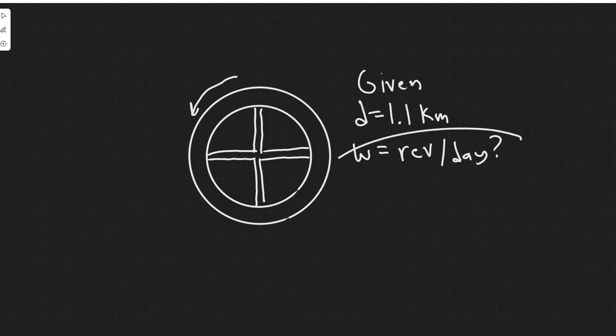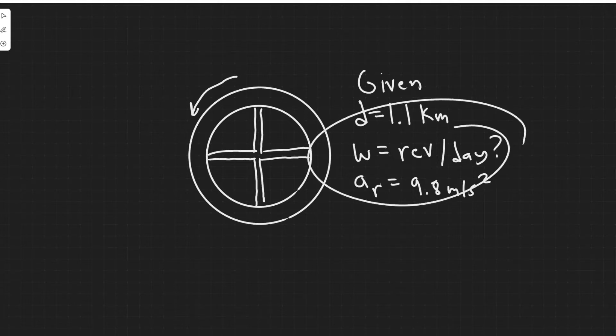And so we're trying to find what omega is if we're assuming the acceleration of rotation, which is a sub r, or the centripetal acceleration, is equal to 1g. And so you should know what 1g is equal to. 1g is equal to 9.8, and then the units are meters per second squared. That's what we're assuming the acceleration is.